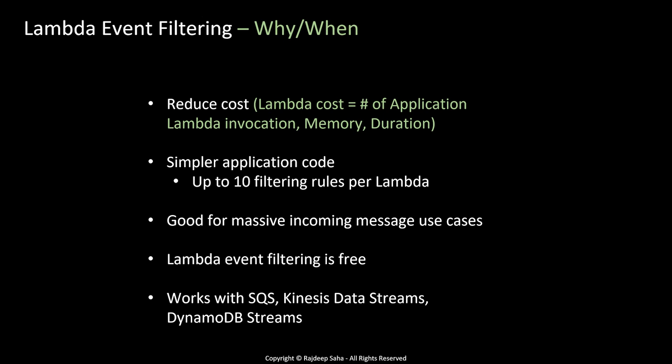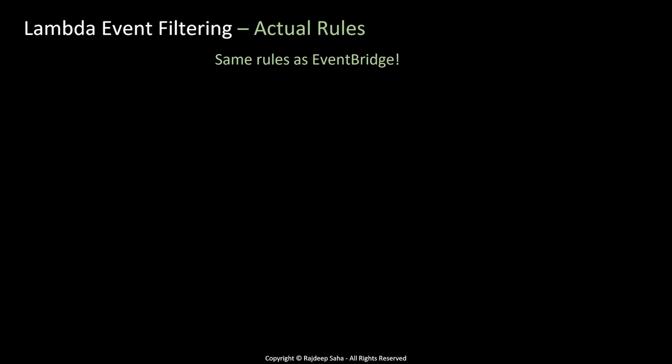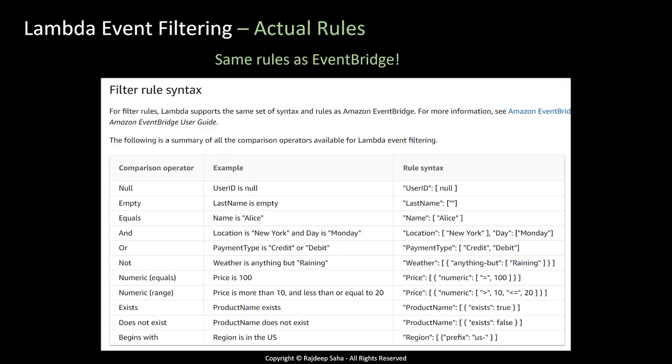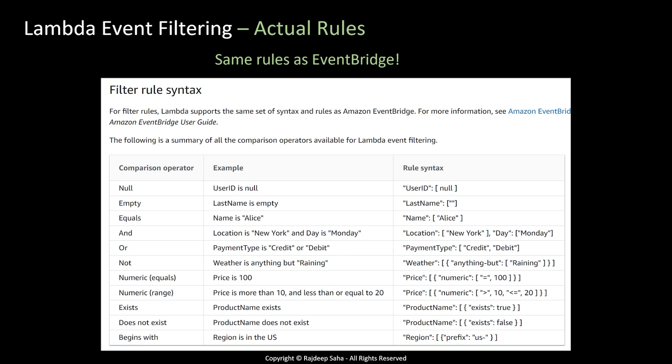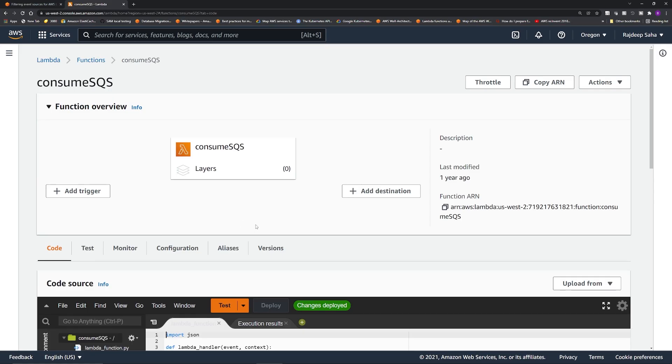The Lambda event filtering feature is free. Currently at release, it works with SQS, Kinesis Data Streams, and DynamoDB Streams. The rules follow the same patterns as EventBridge — for example, if you want Lambda to process messages where the name is 'alice', you code the rule as name colon alice. I have a separate video with a demo showing how EventBridge reacts to different rules; the link is up top.